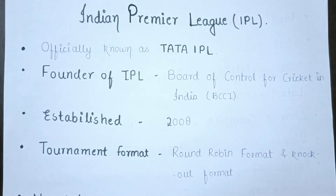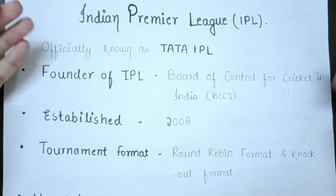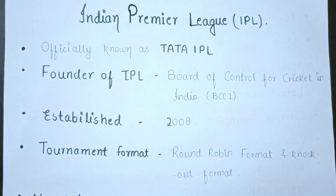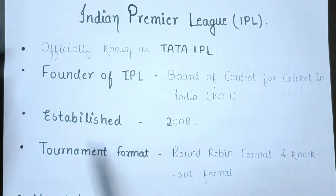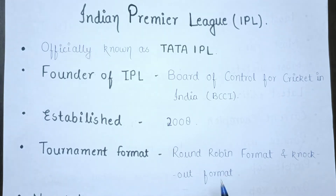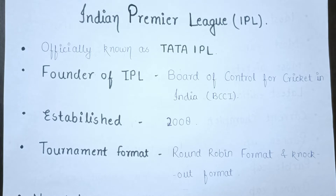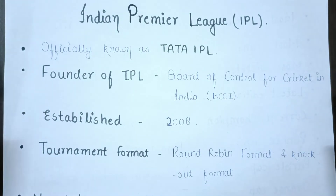When was IPL first established? It was first established in 2008. The tournament format is round robin, which is called league format, and knockout format — both formats are used.